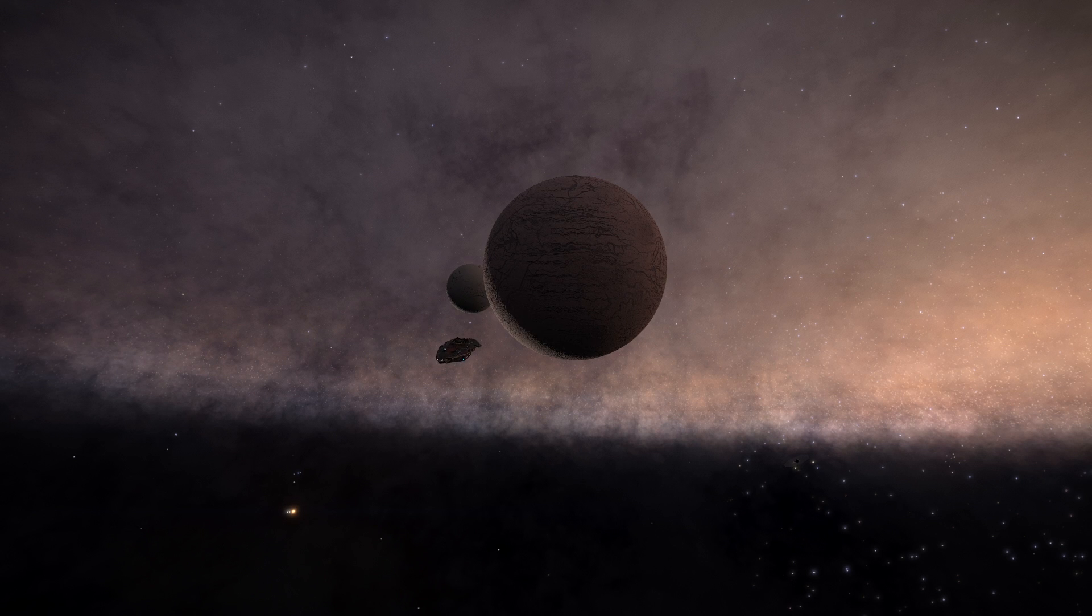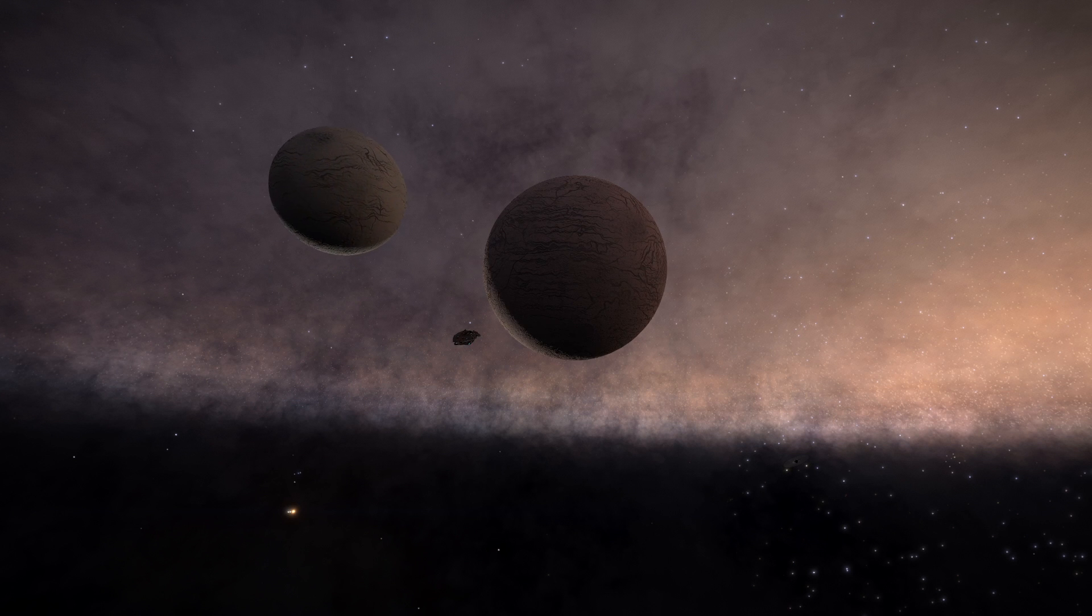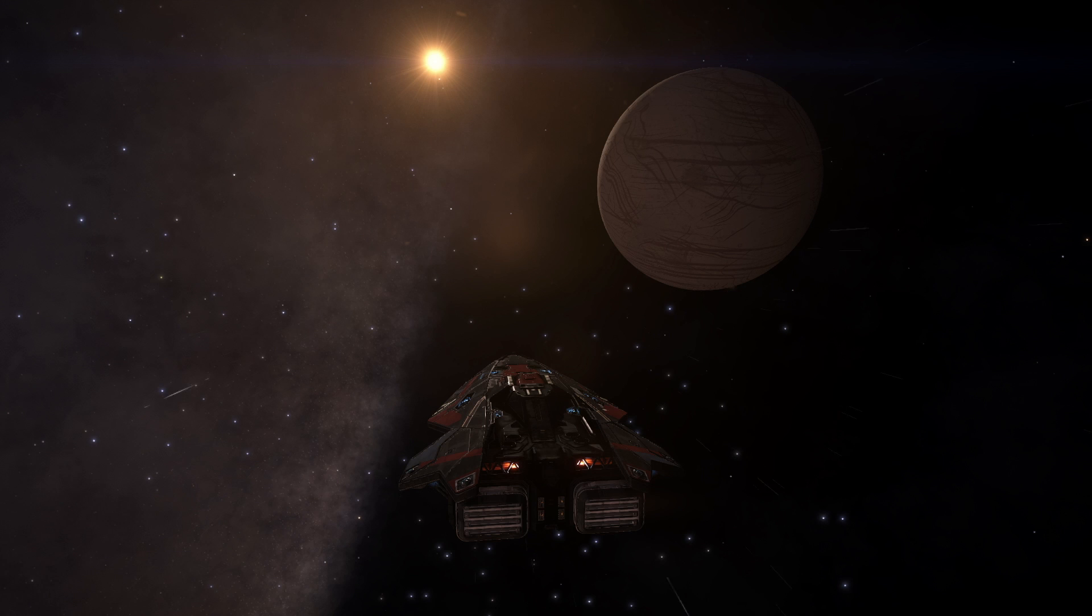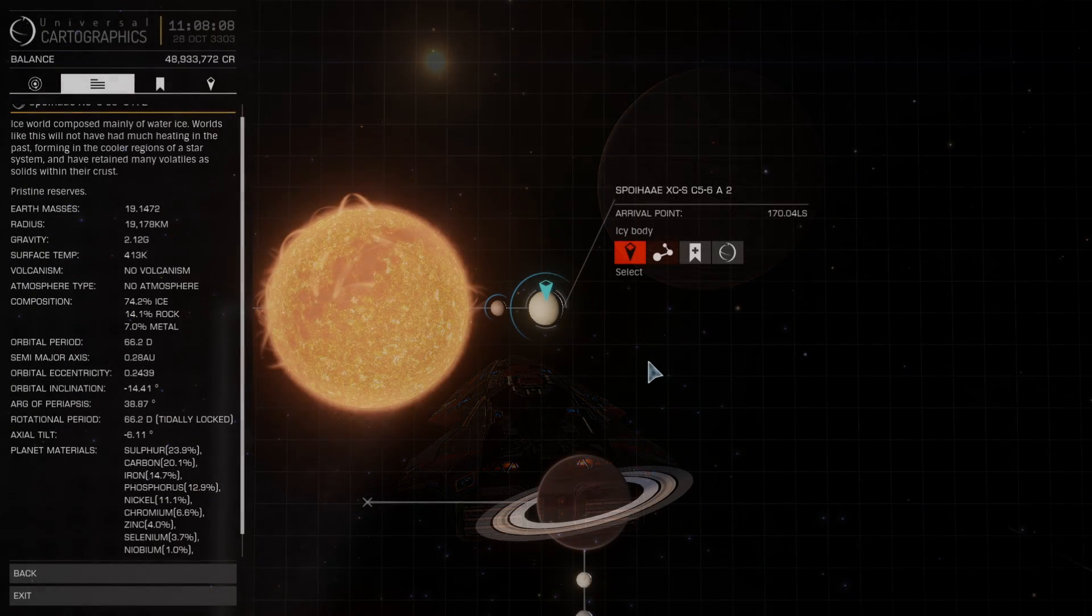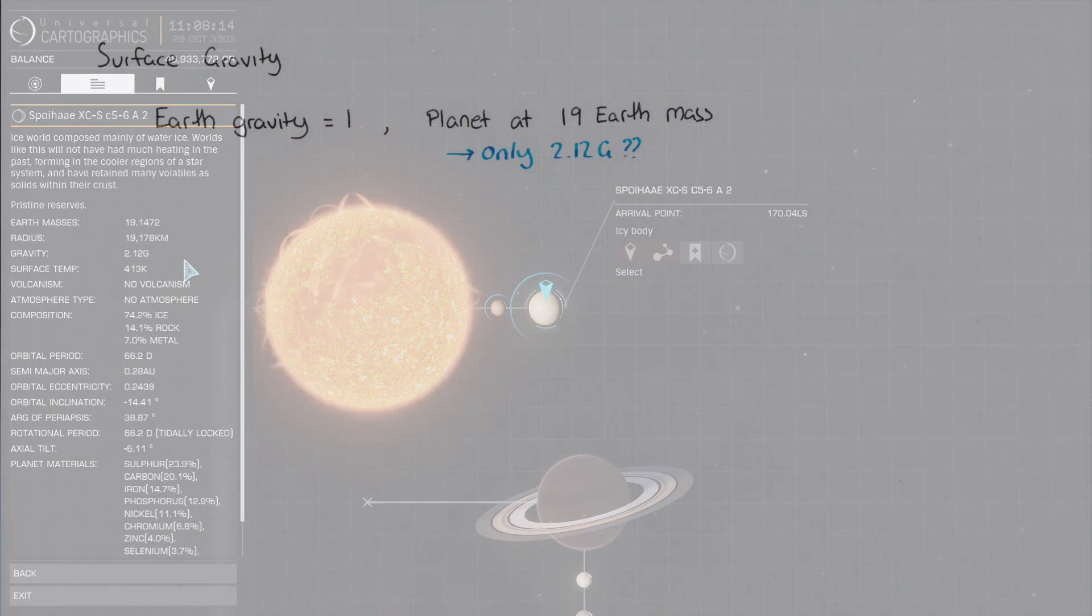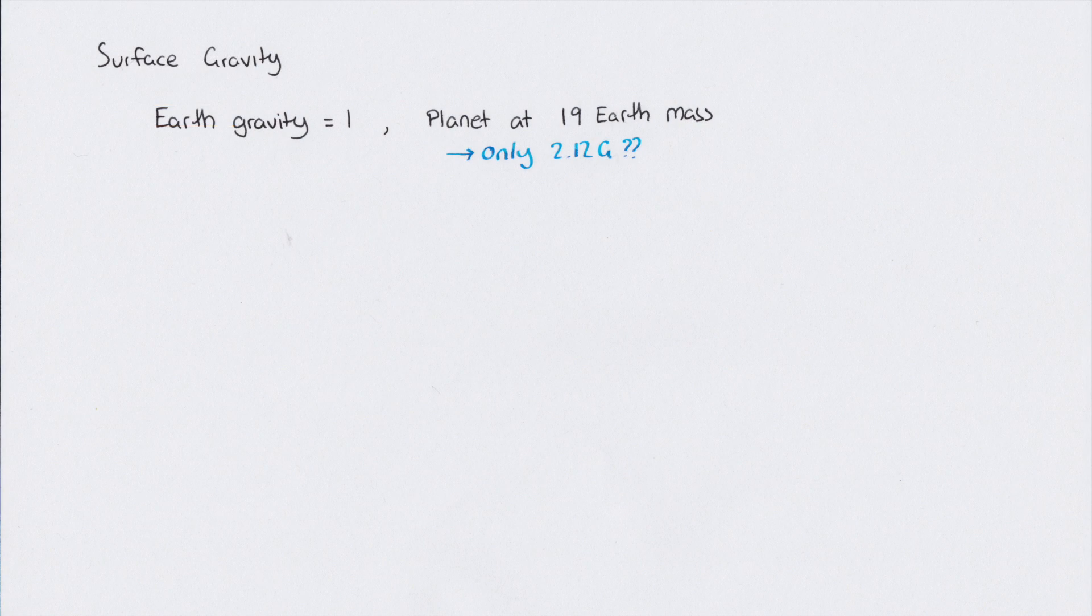With the time-lapse videos that I've been playing, I hope I've been able to demonstrate that everything in Elite is moving. Everything, even if we cannot immediately perceive it. So, the first subject I'll talk about is the answer to a question which comes up fairly often in the community: you're flying around and you find a giant ice planet. You look at it and you say, wait, it has 19 Earth masses, but why only 1.2 g?